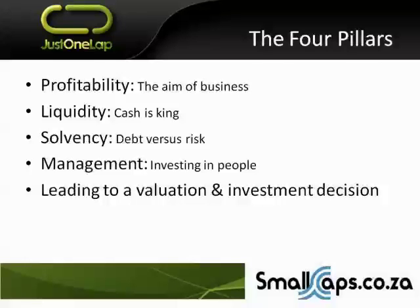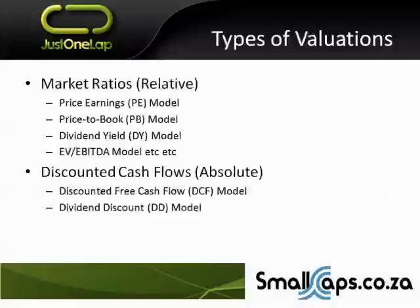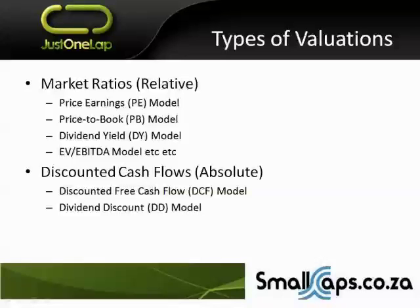We've started working our way through the different valuation models. There are near-infinite methods, but there are more commonly accepted ones. We looked at price-to-book, price-earnings, and various others. This week we're looking at EV/EBITDA. You get relative and absolute valuation models - this is not a definitive list. Price-earnings, price-to-book, dividend yield, EV/EBITDA are all relative market ratios. Then you get absolute valuation models: discounted free cash flow, or DCF, and the dividend discount model.